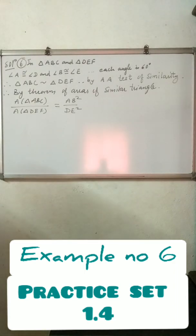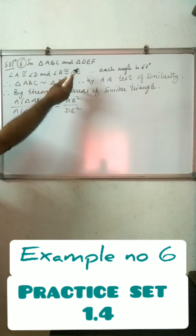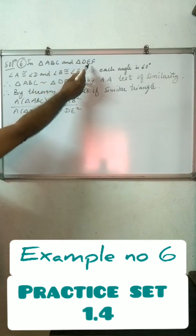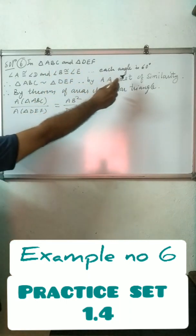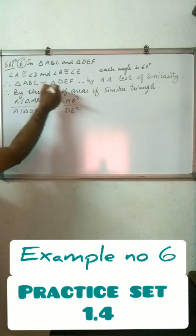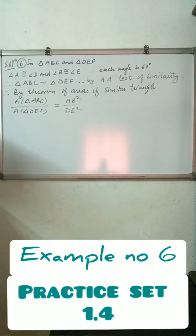These are equilateral triangles. If area of triangle ABC to area of triangle DEF is equal to 1 to 2 and AB is equal to 4, then find DE. In triangle ABC and triangle DEF, both are equilateral triangles. Therefore each angle of an equilateral triangle is 60 degrees. So angle A is congruent to angle D and angle B is congruent to angle E. Hence two angles of the triangles are congruent to corresponding angles of another triangle. Therefore triangle ABC is similar to triangle DEF by the AA test of similarity.